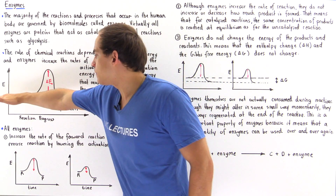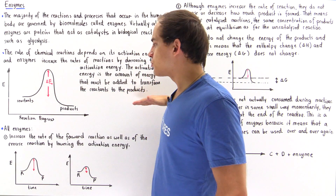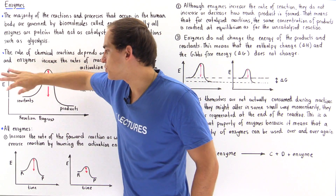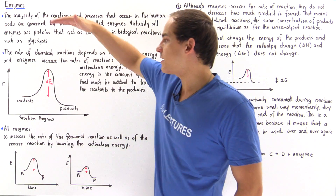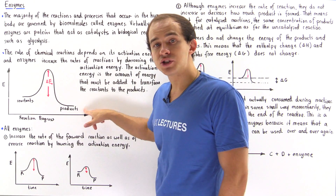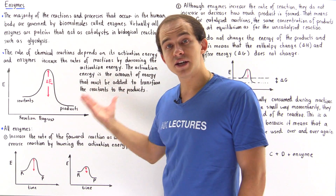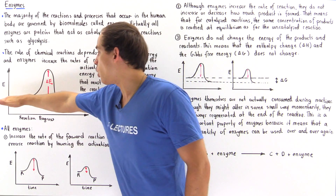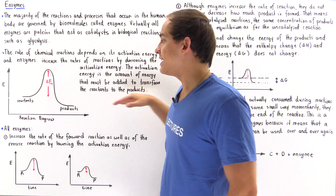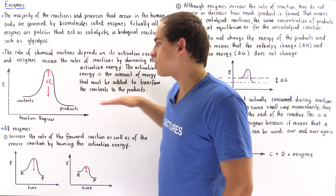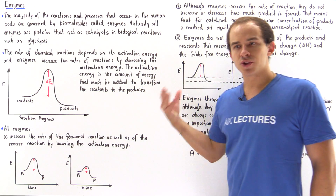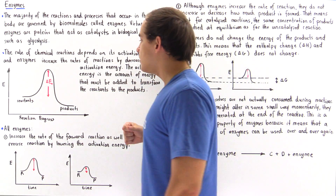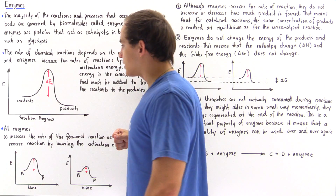For the forward reaction, we see that the reactants are at a higher energy level than the products, which means this is an exothermic reaction. In the forward direction, we have an exothermic reaction and energy is released into the surroundings.